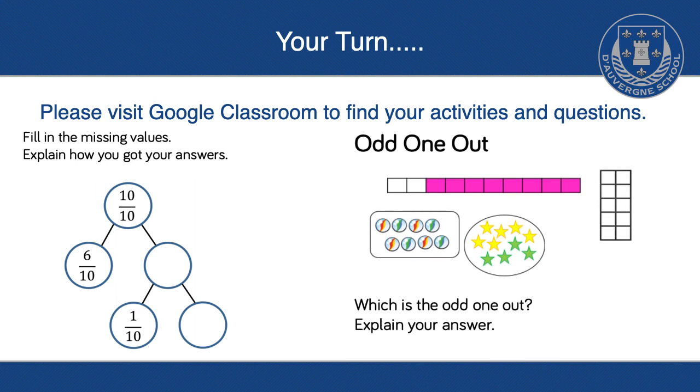And then you'll have things about the odd one out. So, look at the different diagrams. You've got four different ones there, and which is the odd one out and why? So if you can explain, or perhaps write down next to each one, what the fraction would be, and then figure out which is the odd one out and why. Good luck. Have a go. Well done.